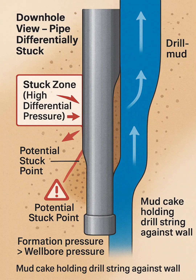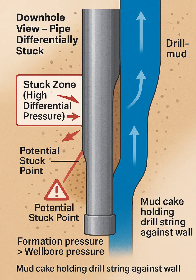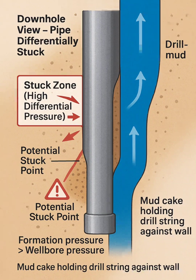Summary: The illustration teaches that differential sticking occurs when the formation pressure is higher than the hydrostatic pressure of the drilling mud, pressing the pipe against the wall and holding it through mud cake adhesion. This is a static sticking mechanism — not caused by cuttings or mechanical blockage, but by pressure imbalance and adhesion.